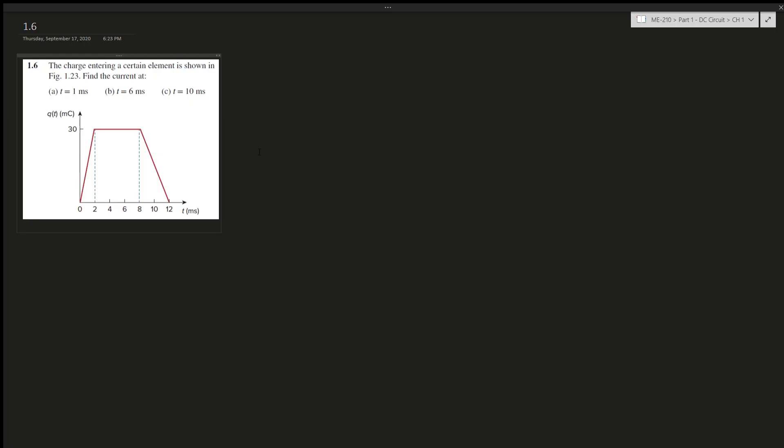Alright, question 1.6. It says the charge entering a certain element is shown in Figure 1.28, which is the one below, and find the current at a, b, c at different times. Okay, so this looks a little intimidating but it's actually not. So first, we're given the charge over time